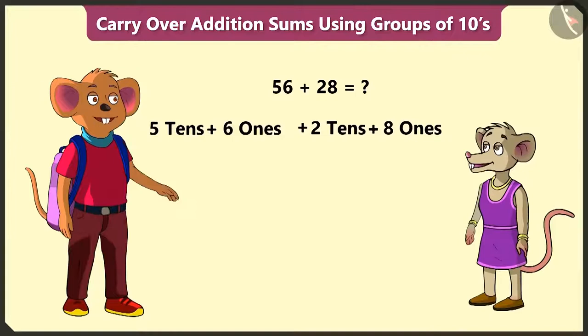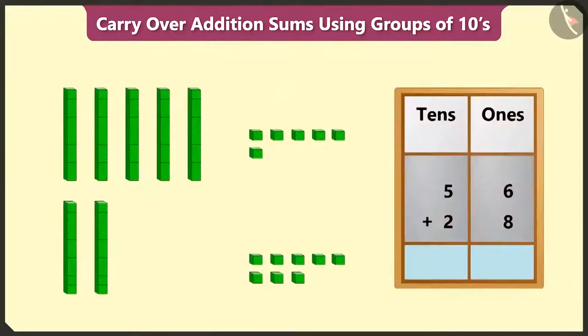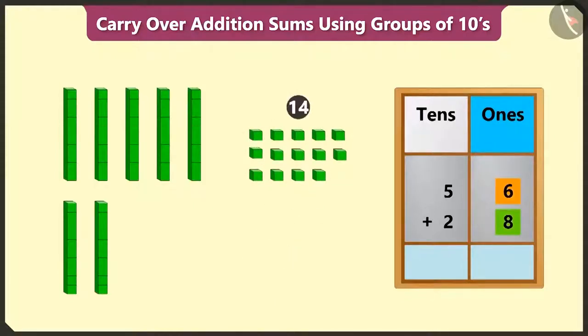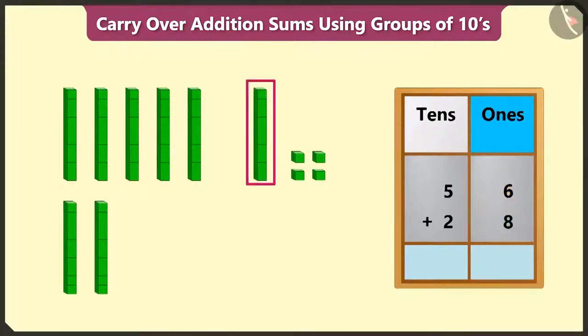Well done. And then? First of all, we will add the numbers in the ones place. 6 ones added to 8 ones will equal 14. This means 6 ones and 8 ones added together will equal 14 ones. And out of 14 ones, we can form a group of 1 tens. So, 14 has 1 tens and 4 ones.